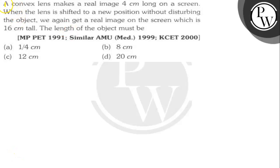Hello virtual. Let's read the question. A convex lens makes a real image 4 cm long on a screen. When the lens is shifted to a new position without disturbing the object, we again get a real image on the screen which is 16 cm tall. The length of the object must be what? Let's find out.